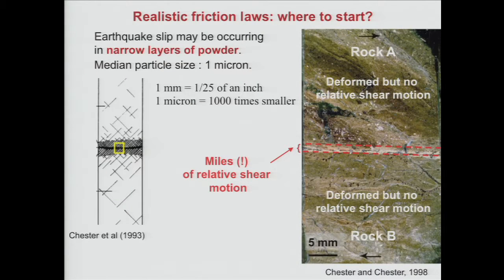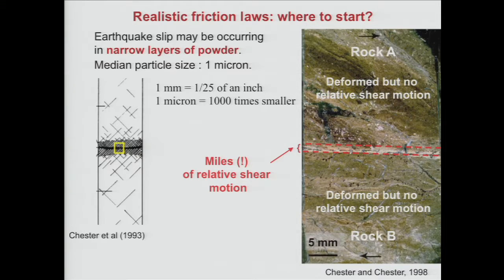It's really incredible how thin are these zones where the actual shear occurs — almost like an actual mathematical plane. It turns out that earthquake slip may be occurring in these very narrow layers of basically rock powder. After miles of relative shear motion, the rock here is completely pulverized, and the mean particle size is one micron — that's a typical size of a bacterium. One millimeter is about one twenty-fifth of an inch, and one micron is a thousand times smaller than that.